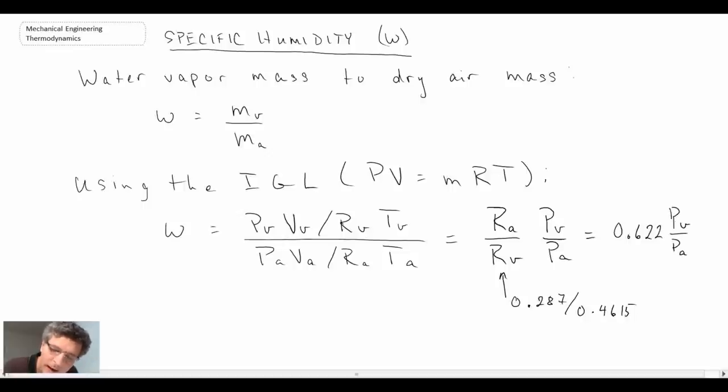So we get that. In the numerator is the vapor pressure of the water vapor, and in the denominator is the pressure of the atmospheric air. So what we can do is continue on.